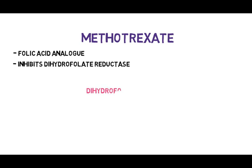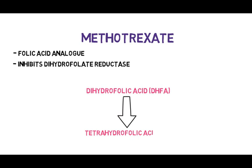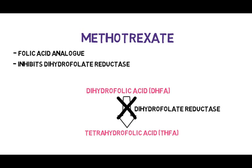Now take a look at this step. There is dihydrofolic acid, known as DHFA, and it is converted into tetrahydrofolic acid, abbreviated as THFA. This is a very important step in DNA synthesis. As you can see here, the dihydrofolate reductase enzyme is involved in this conversion, but Methotrexate, being a folic acid analog, will inhibit this step so there won't be adequate THFA formation, and DNA synthesis is affected.